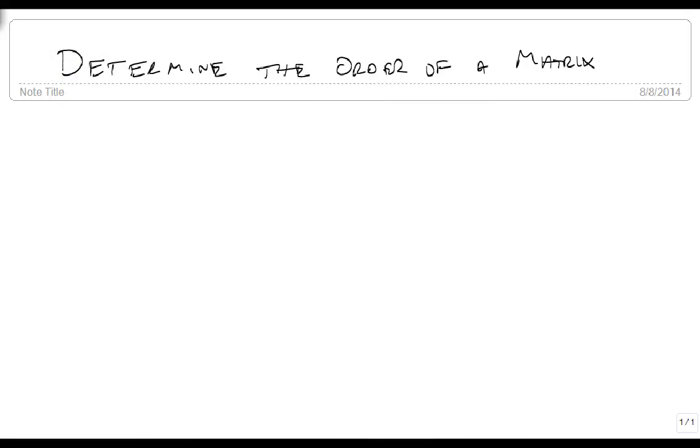We're now going to determine the order of a matrix by first looking at it, and then we count the rows first, because it's always in rows, then the number of columns.